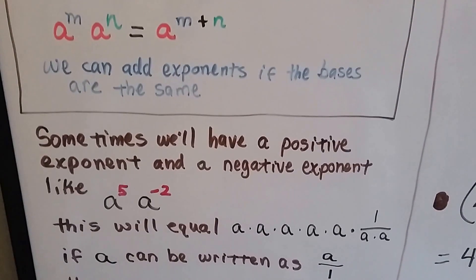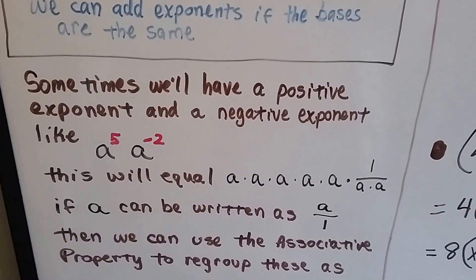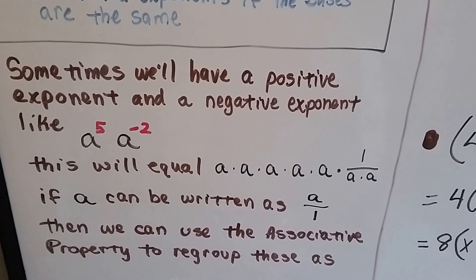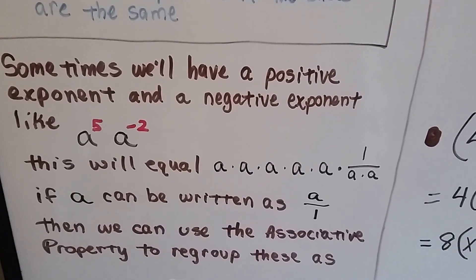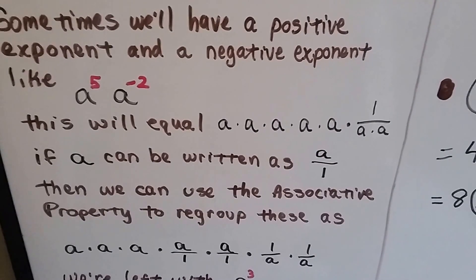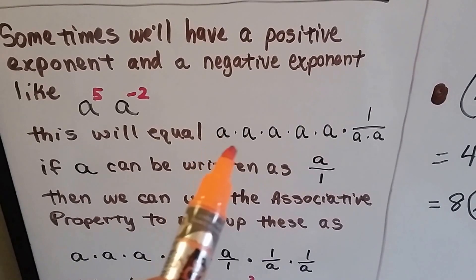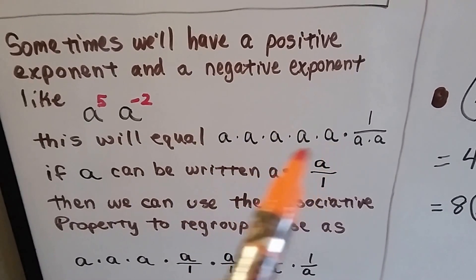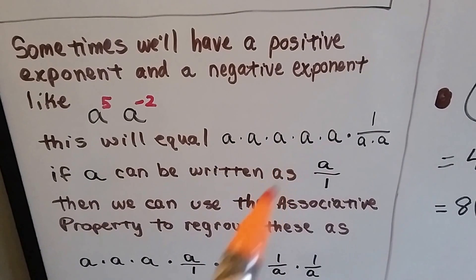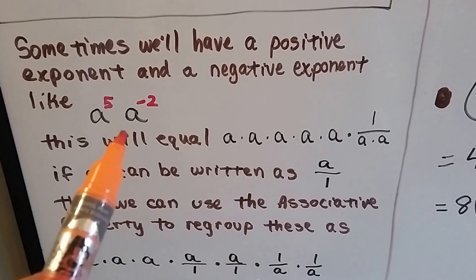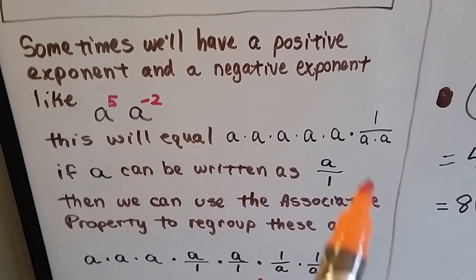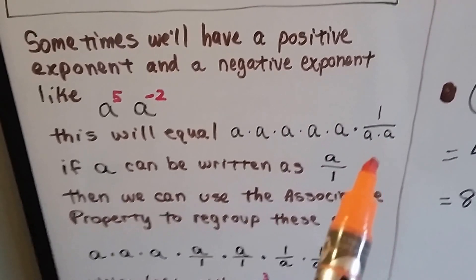Sometimes we'll have a positive exponent and a negative exponent, like a to the fifth times a to the negative second. A to the fifth means a times a times a times a times a — five of them multiplied together. And a to the negative second is a fraction: one over a times a, because it has a negative exponent.